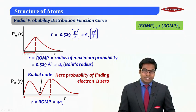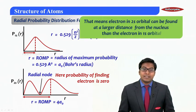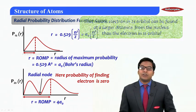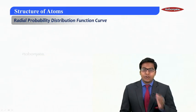So radius of maximum probability of 1s will always be less than 2s. That means electron in 2s is always found at the larger distance from the nucleus compared to the electron in 1s orbital.